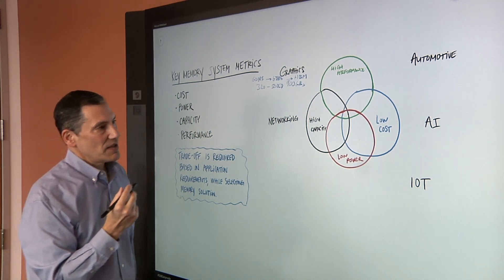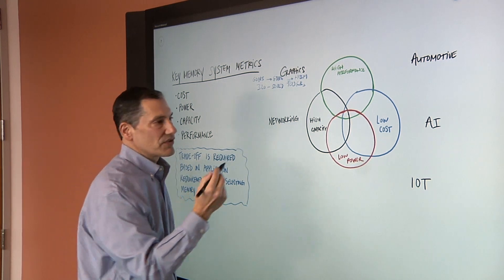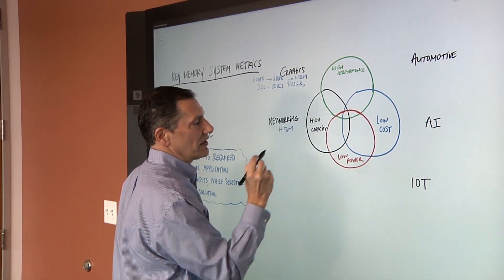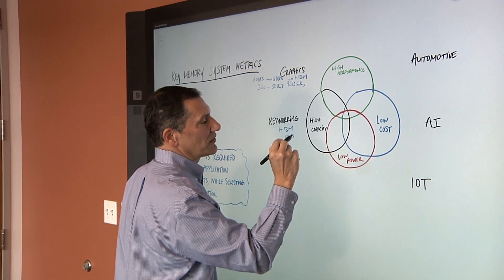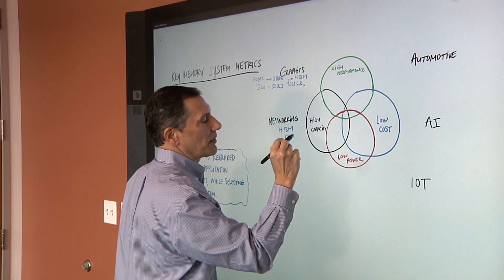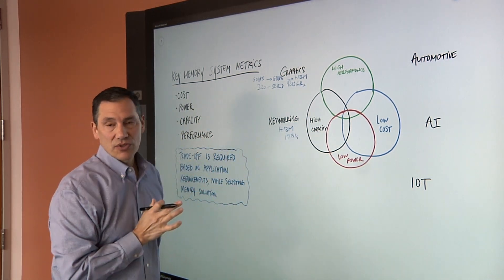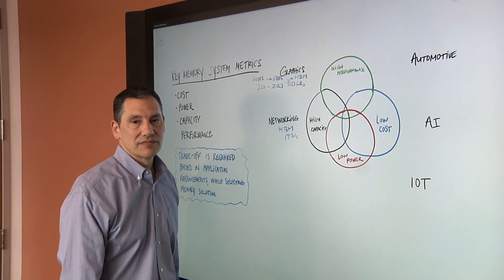What happens on networking? Where do you see that? Networking, again, is looking for very high throughput. A lot of these we're seeing HBM in the one terabyte range, bytes per second. HBM is a very good solution for the networking cards.